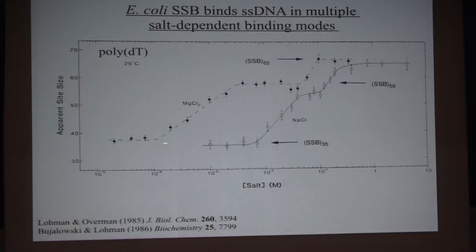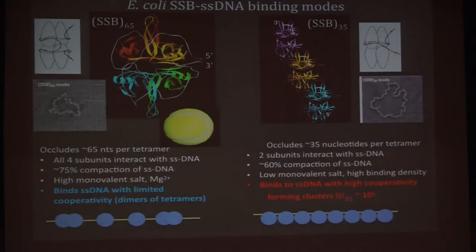In magnesium, you see the same transitions, although shifted to a much lower salt concentration. If you do the experiment in polyamines — spermine, spermidine — it's shifted to even micromolar ranges of salt concentration.